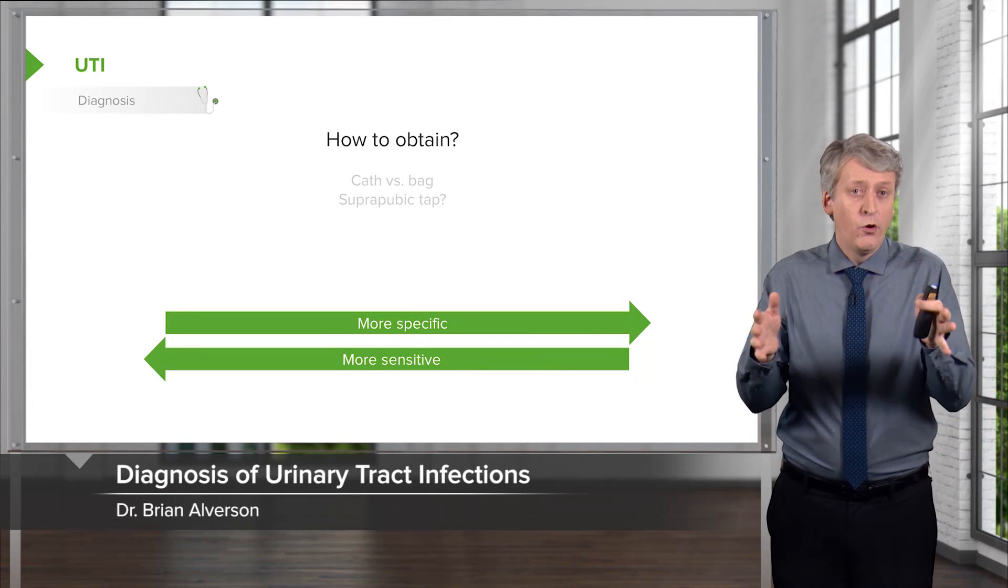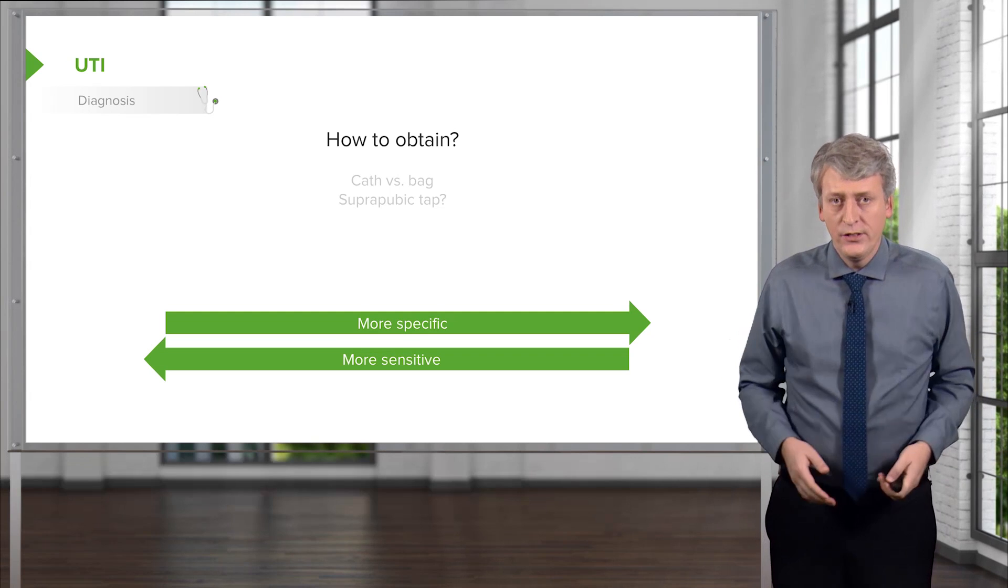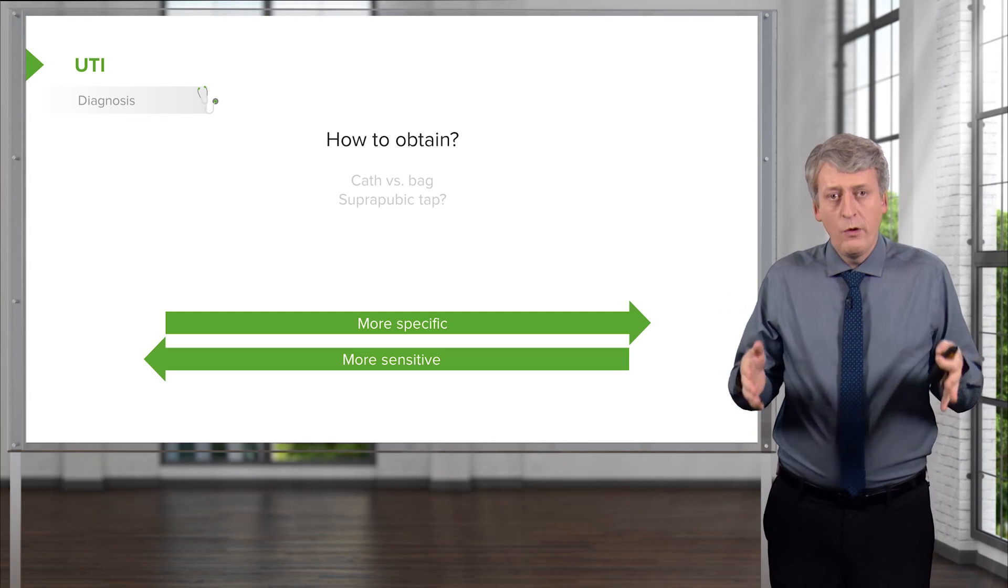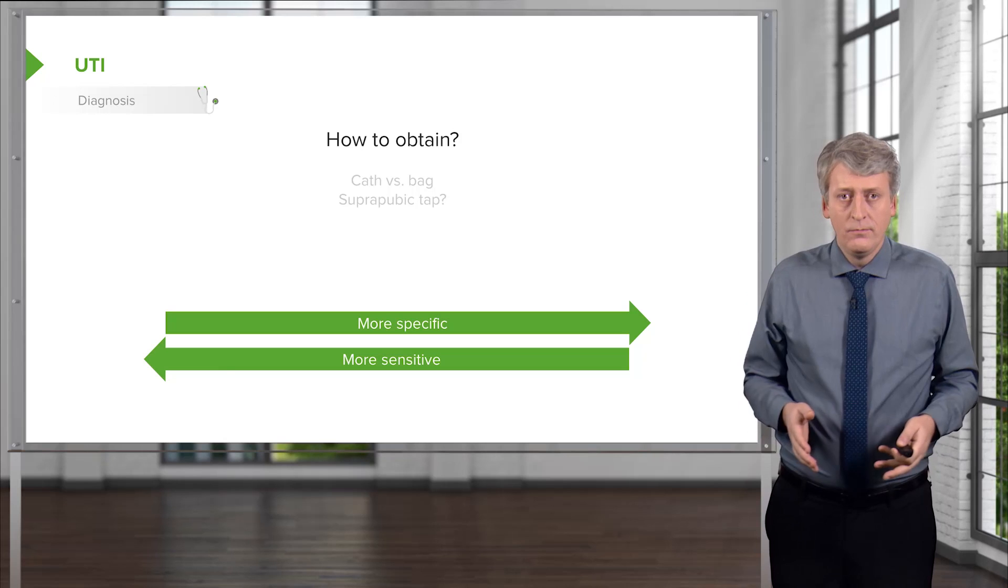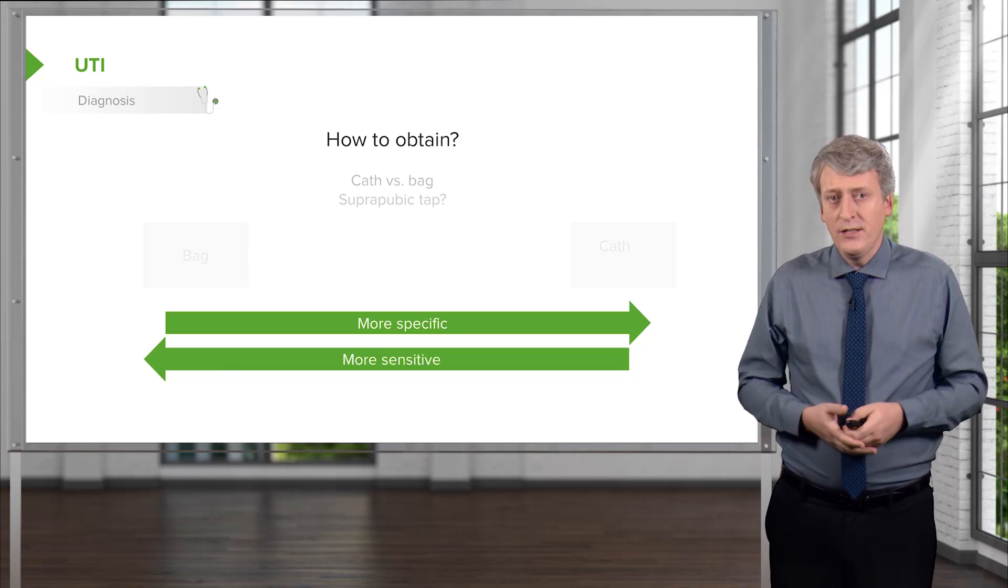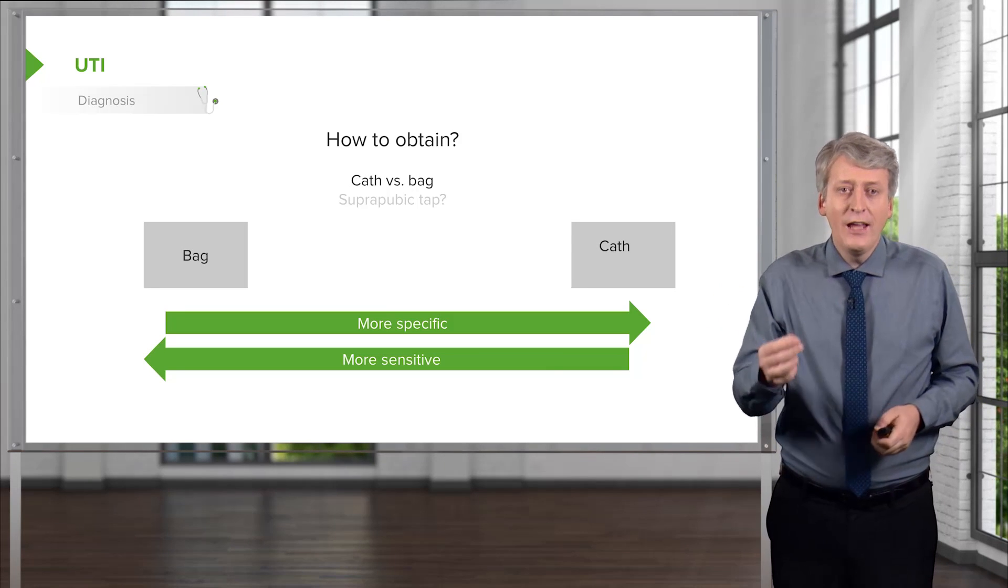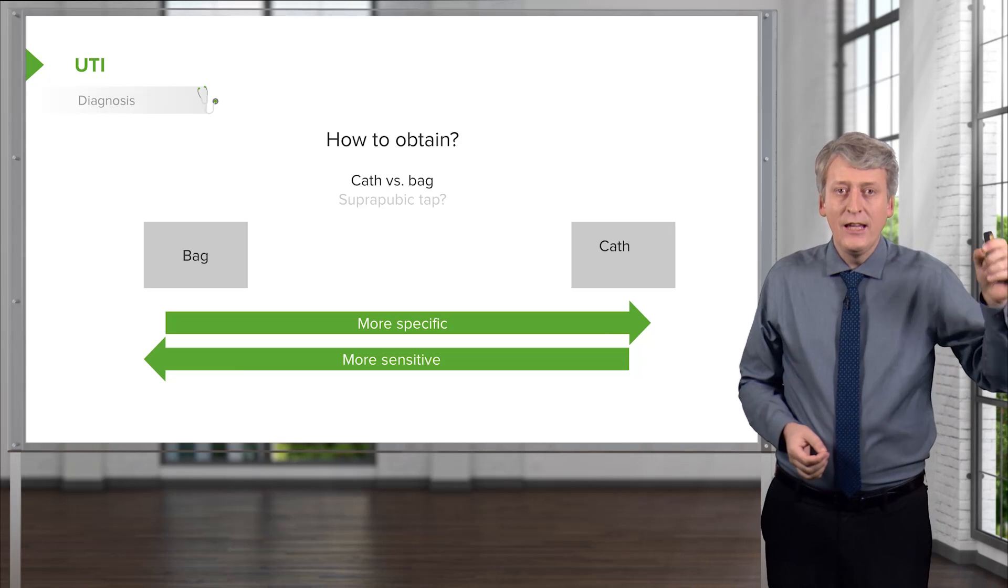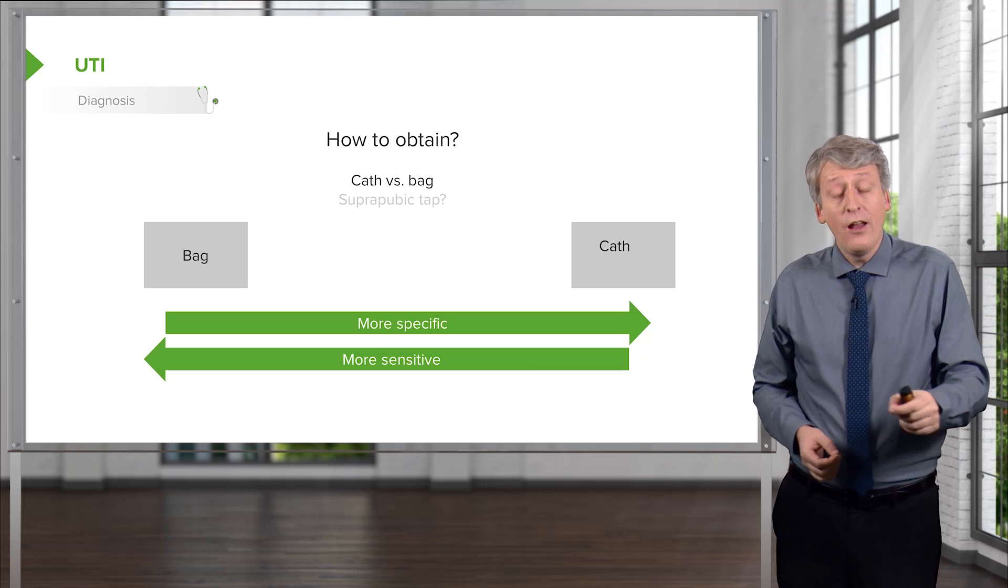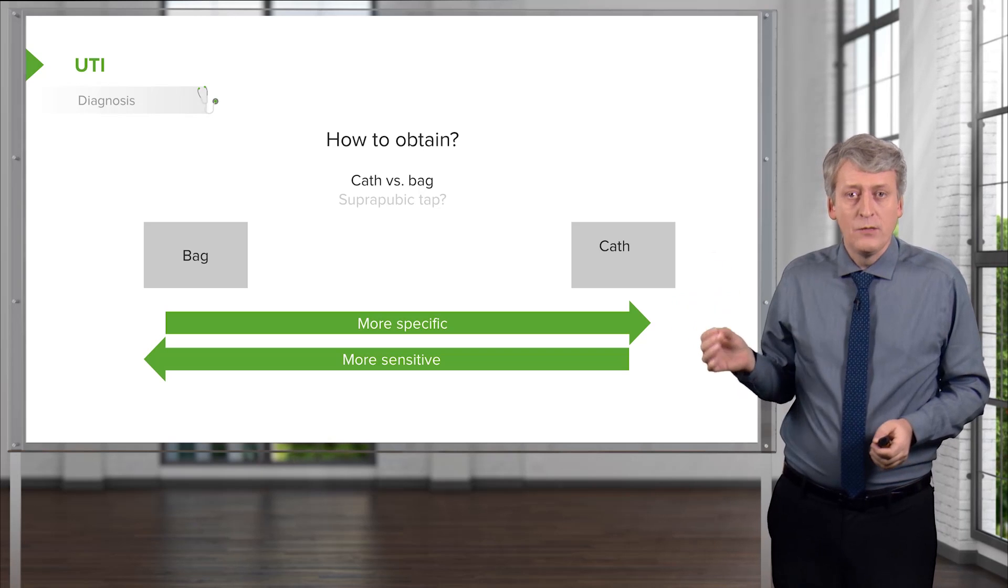I'm worried about urinary tract infection because that's the most common cause of bacterial illness in these children. What do I do? Whenever we get a test, we want to ask, is it sensitive or specific? In the case of this, we have two ways we can check labs in these kids. We can get a bag or we can get a catheterized urine. If a child has a urinary tract infection, the bag is more sensitive. It's more likely to be positive. If a child does not have a urinary tract infection, the cath is more likely to be negative. It's more specific.